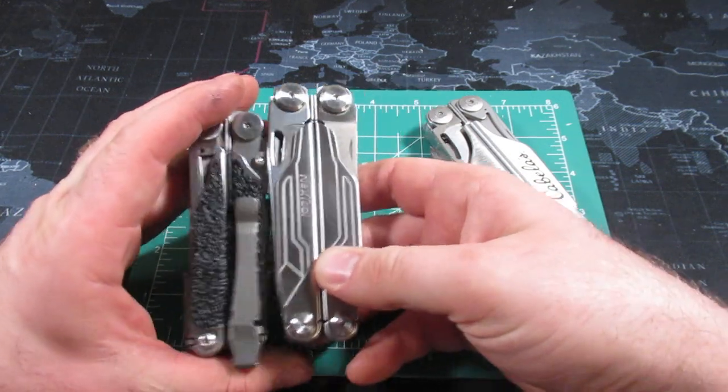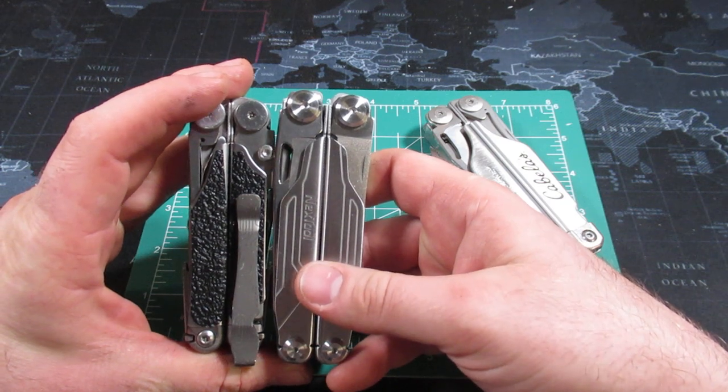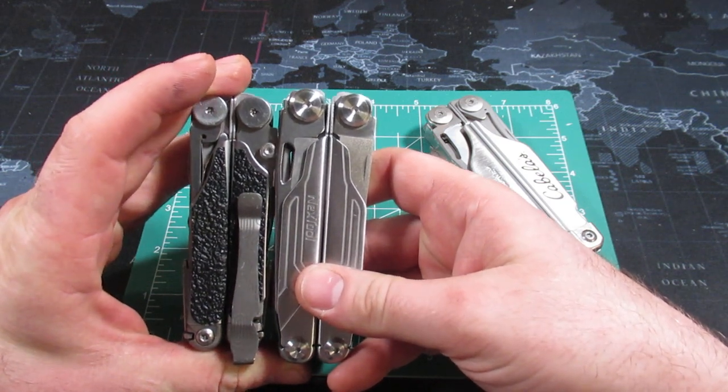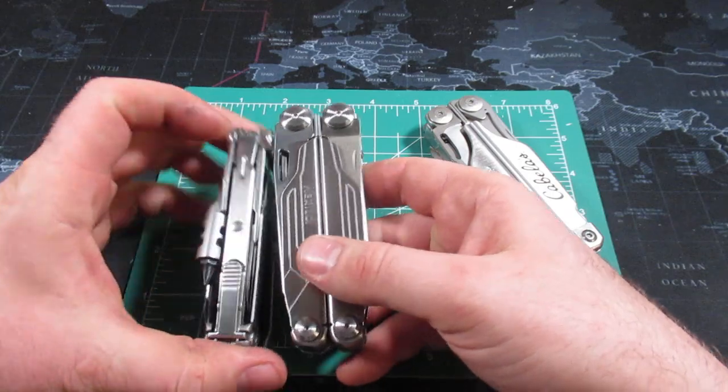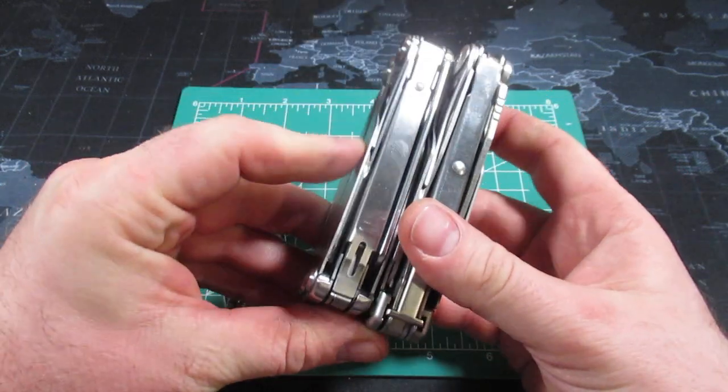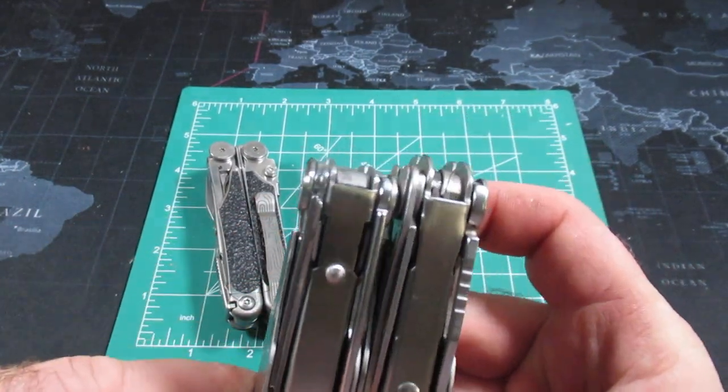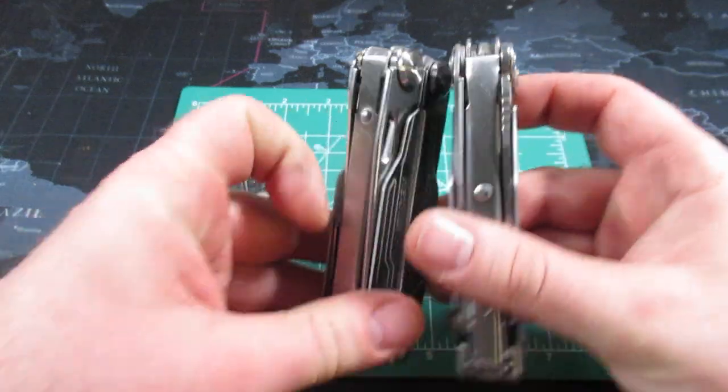When you look purely at the frame size of the Nextool Captain, it is actually larger than the Leatherman Wave, but it is a little bit smaller in frame size than the Leatherman Surge, just a hair, but it is a little bit smaller.